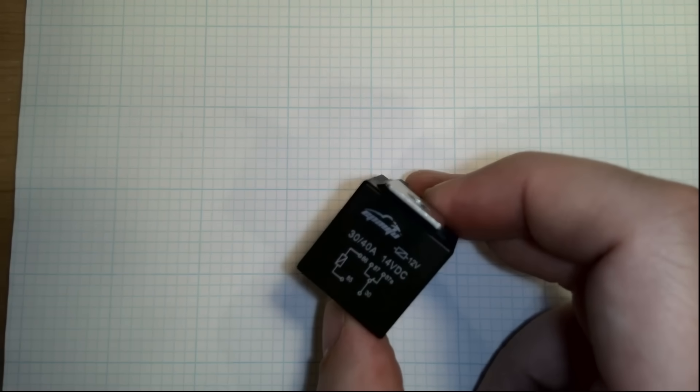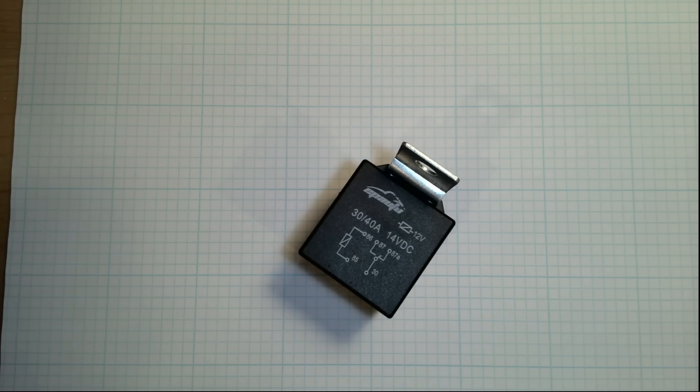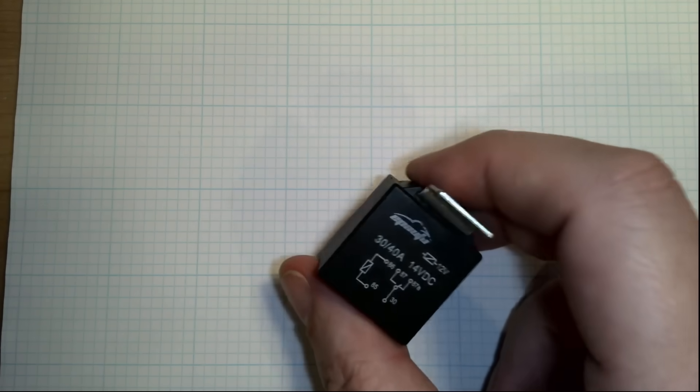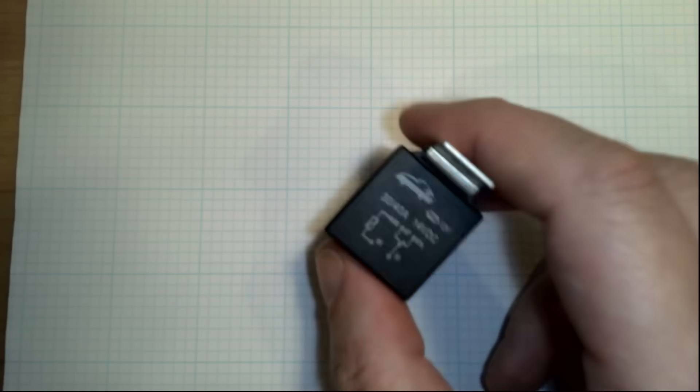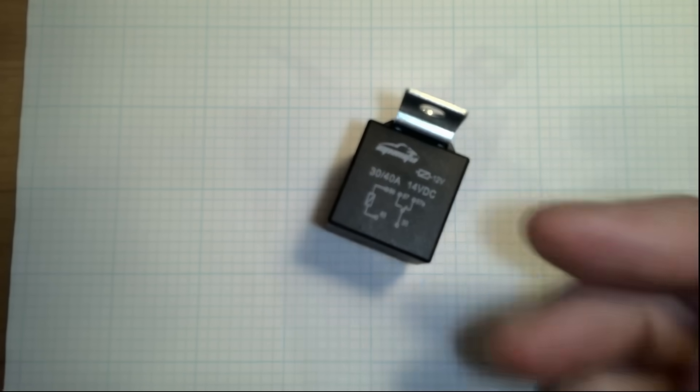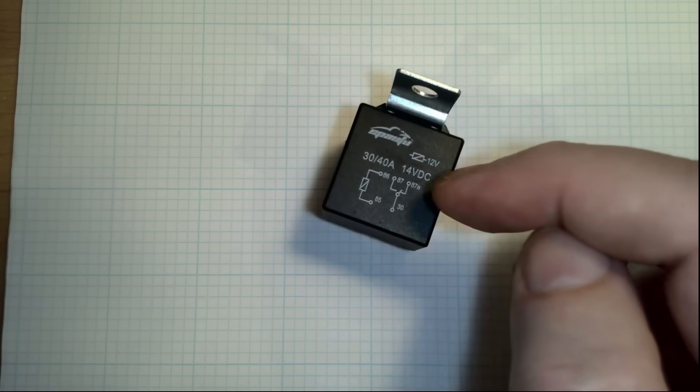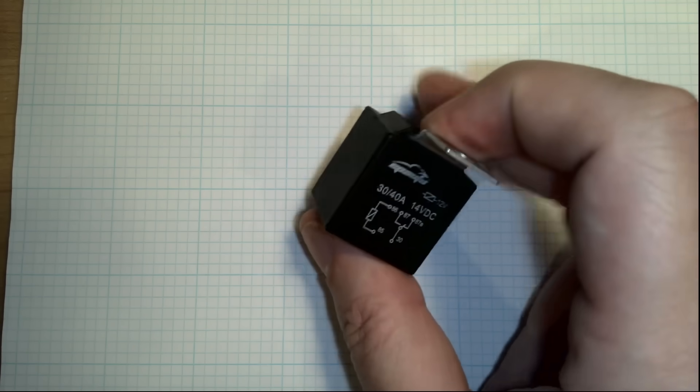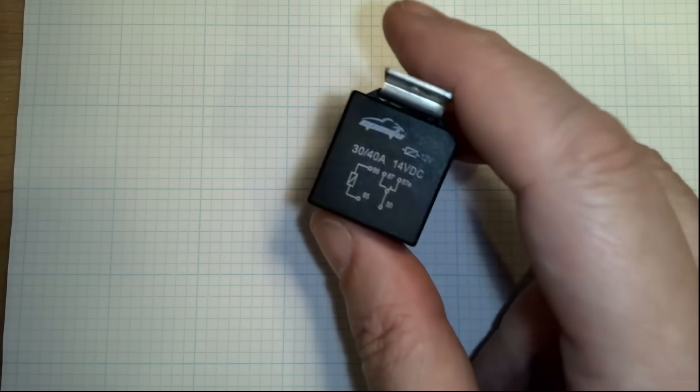Relays tend to be a mainstay of power delivery in a car, especially for high current applications. Your electric fan, headlights, you see these a lot. They're really nice because they're not affected too much by noise. They can deliver a lot of current and they're pretty simple.